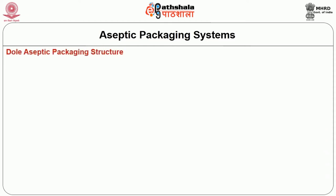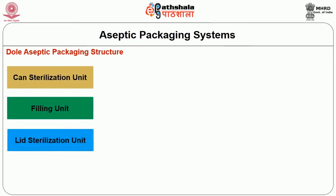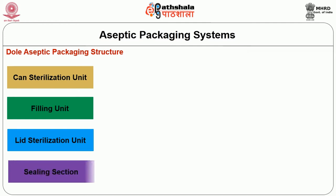The Dole aseptic packaging structure consists of four fundamental units: the can sterilizing unit, the filling unit, the lid sterilizing unit, and the sealing section. Now let us see about these four fundamental units one by one.